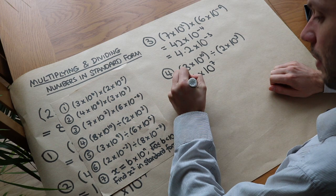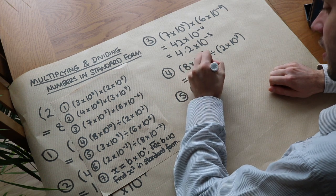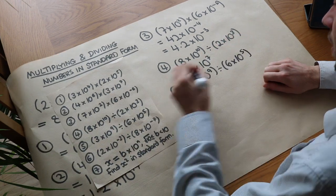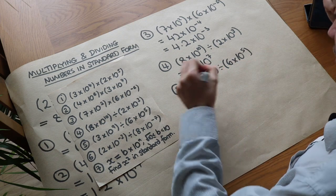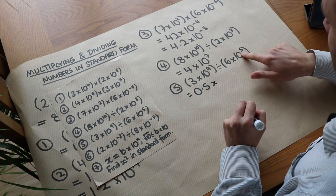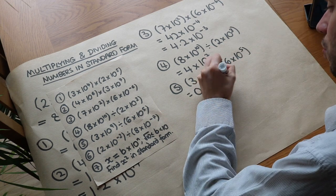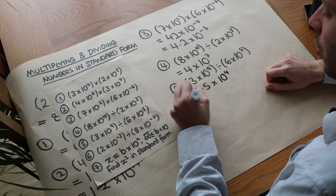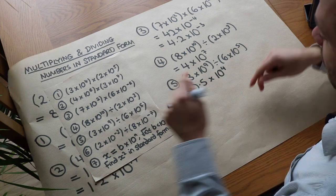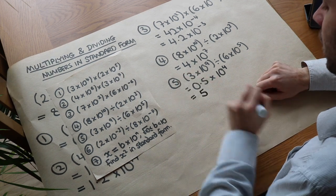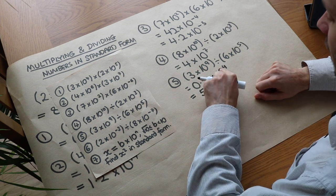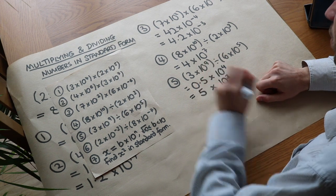What about this one — a bit harder. 3 times 10 to the 9 divided by 6 times 10 to the 5. We do 3 divided by 6 which is 0.5, and then 10 to the 9 divided by 10 to the 5 — subtract the powers — 9 minus 5 is 4. This is not in standard form because 0.5 is not between 1 and 10. So we multiply by 10 to get it between 1 and 10, and to compensate the power goes down by 1.